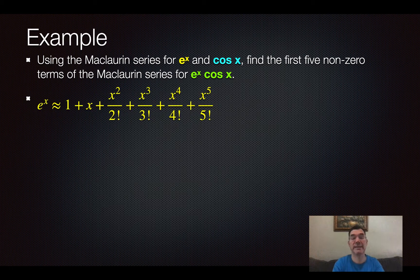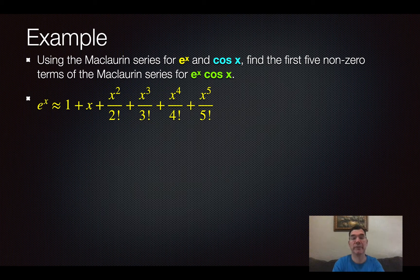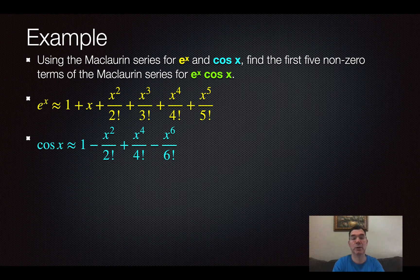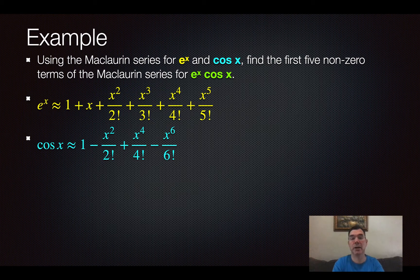All right, so there is the Maclaurin series for e to the x. We know that from previous lessons, and here is the Maclaurin series for cosine x. Now notice that it does go on beyond those terms,